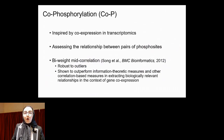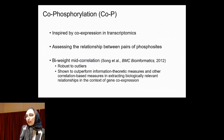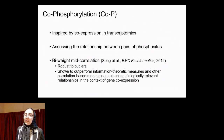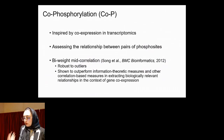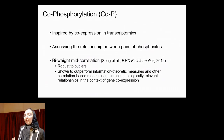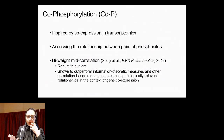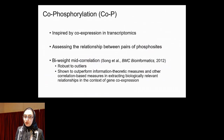Inspired by the co-expression concept in transcriptomic data and its applications, we define co-phosphorylation, which is basically the correlation between the phosphorylation profile of phosphosites across different biological samples. We use the biweight correlation instead of typical Pearson correlation because it is more robust with outliers, being a median-based rather than average-based correlation.